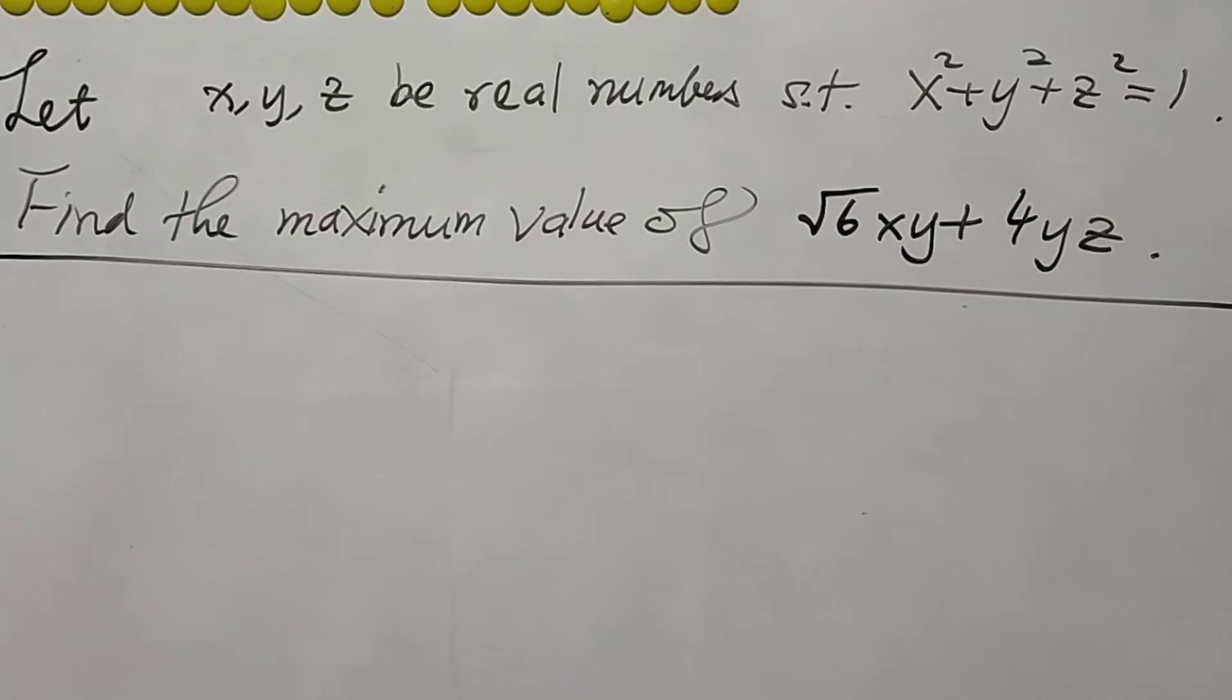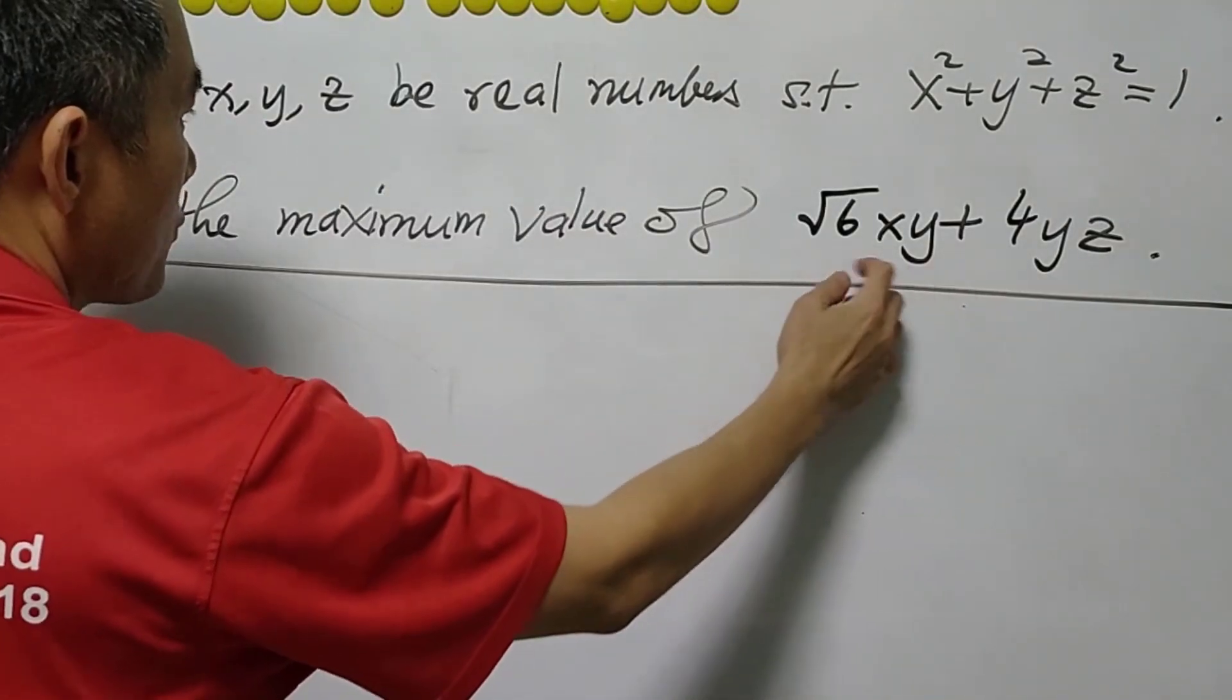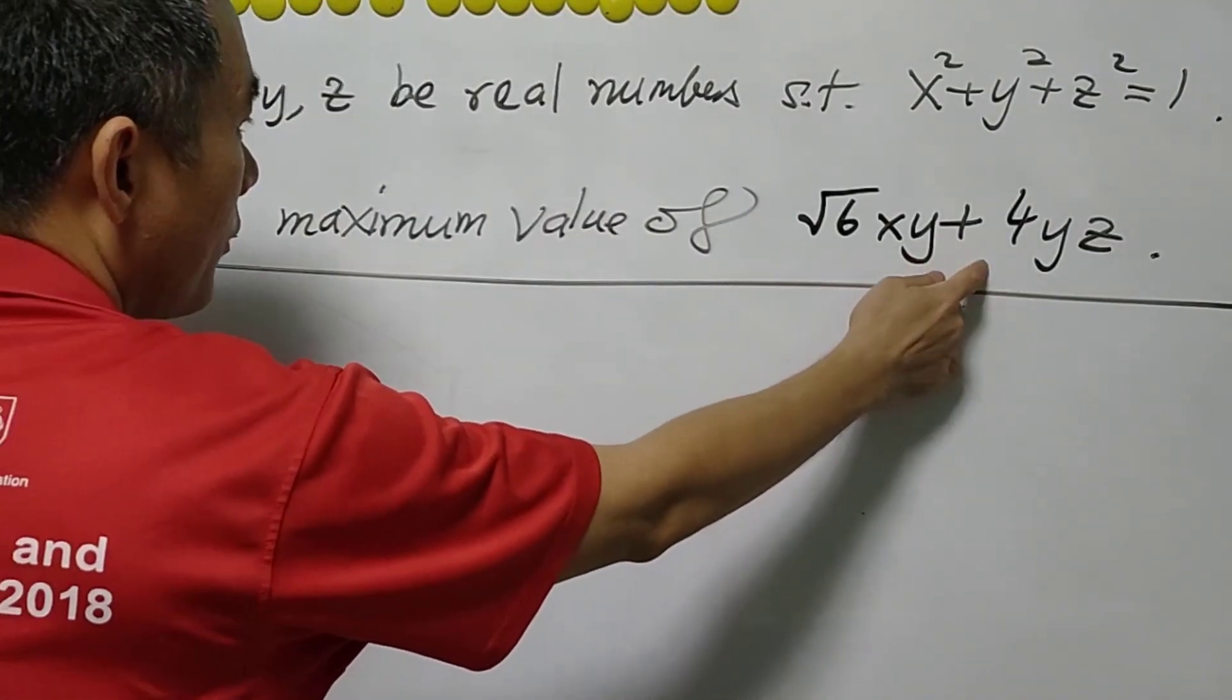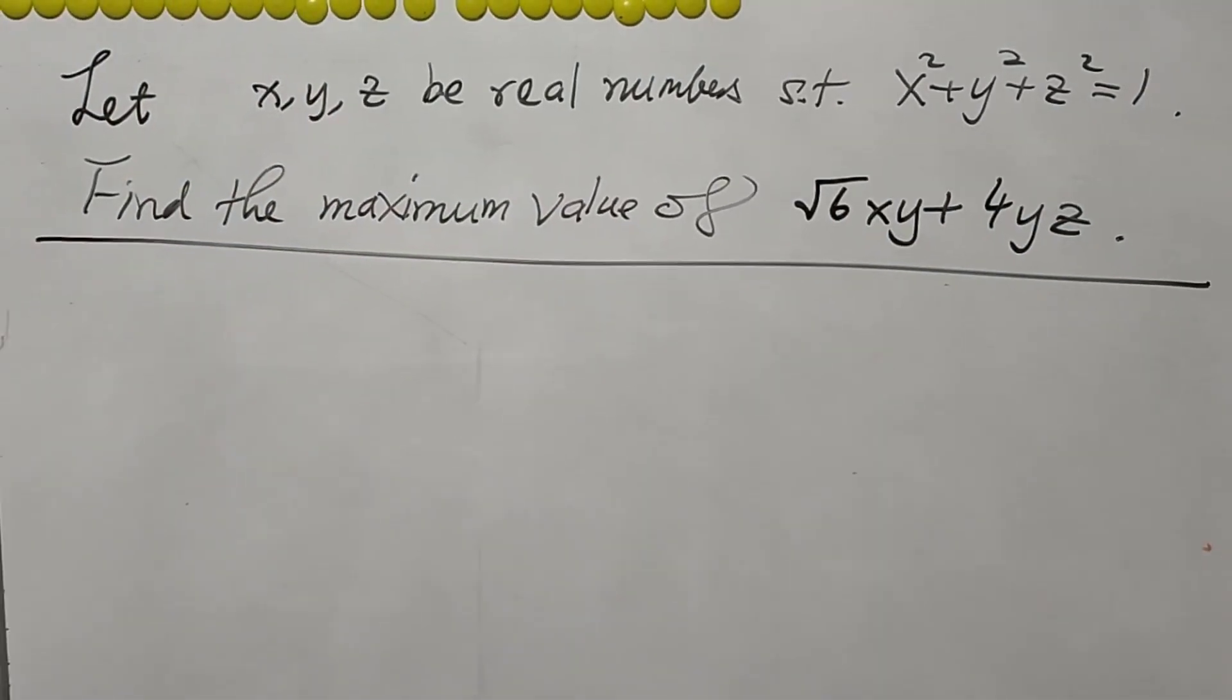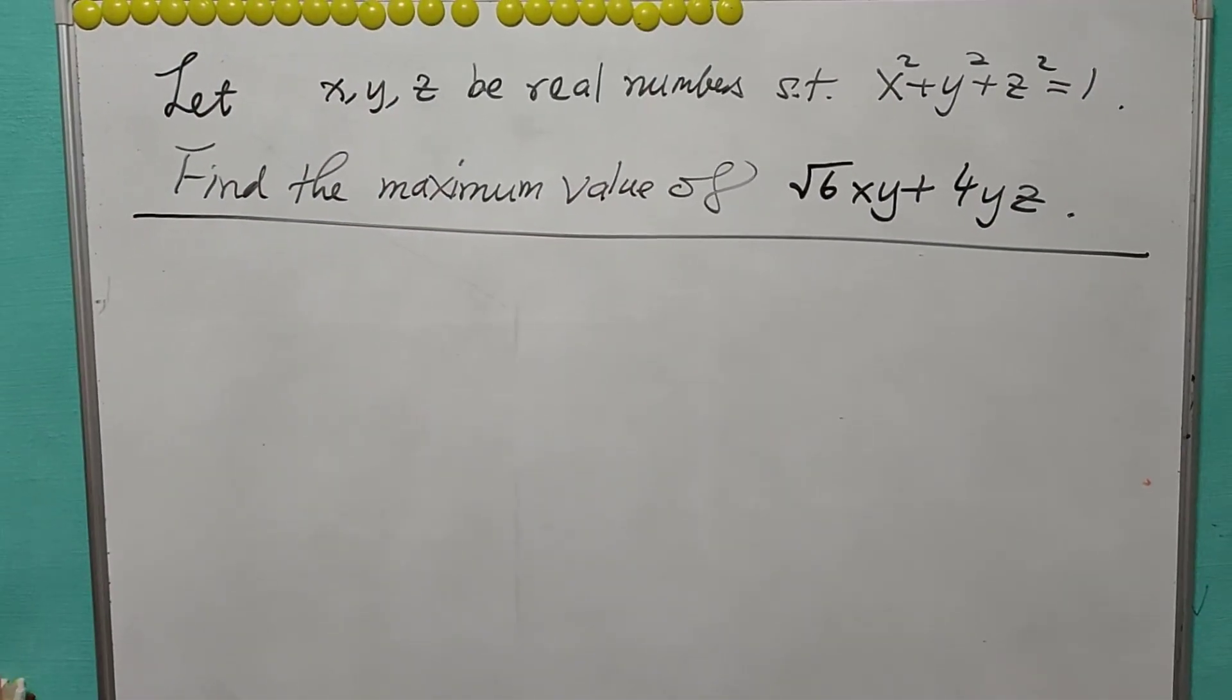You are asked to find the maximum value of this expression, that is, √6xy + 4yz. I'm going to use just AM-GM inequality to solve this question. Please have a good try before you look at the answer.